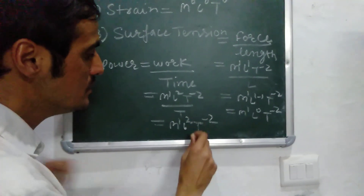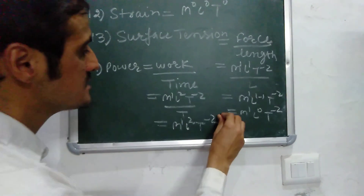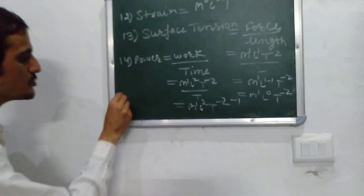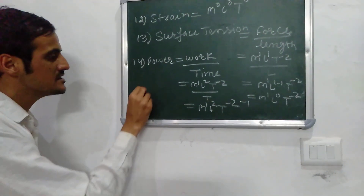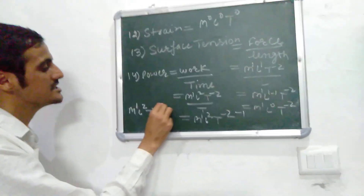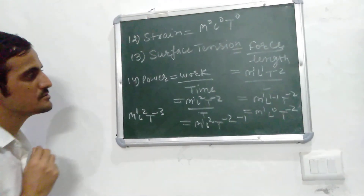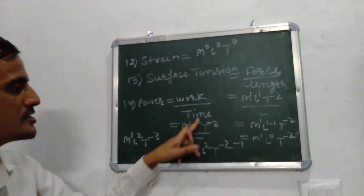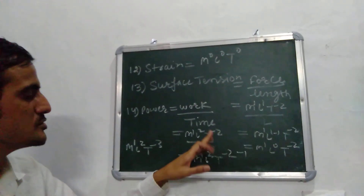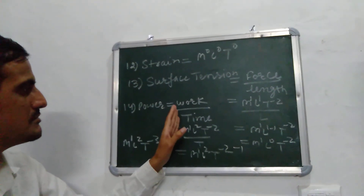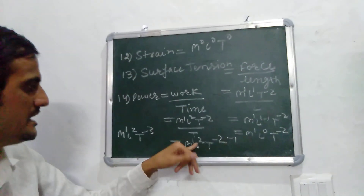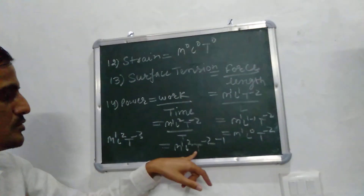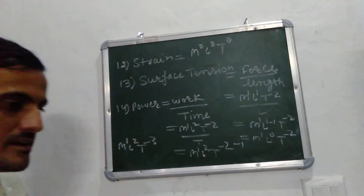Next is power. Power is work upon time: M1 L2 T-2 divided by T, which gives M1 L2 T-2-1, coming out to be M1 L2 T-3. This is the dimensional formula of power — work upon time, or force multiplied by displacement upon time.